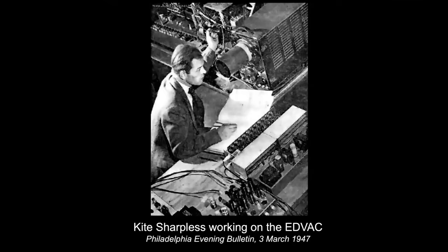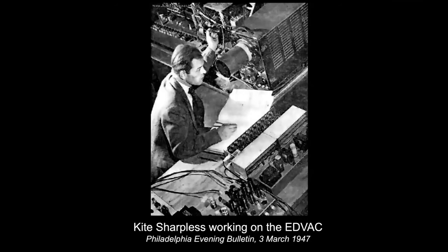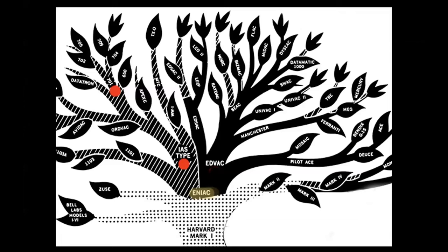Eckert and Mauchly transitioned from the Moore School to the private sector, forming their Electronic Control Company and going on to create the BINAC and the very famous UNIVAC. Von Neumann set up his own electronic computer project at the Princeton Institute for Advanced Study — here he is standing proudly by his Princeton computer in 1952. It contained around 2,600 vacuum tubes, about the same number as Colossus and vastly fewer than ENIAC. As the tree depicts, the IBM 701 was modeled on the Princeton IAS computer — IBM's first mass-produced stored program electronic computer, completed in 1952 and unveiled in 1953.